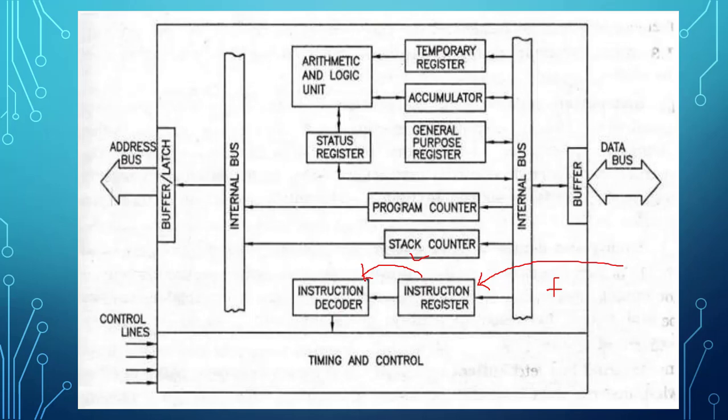This means the instruction decoder has to do the decoding. It means we need to interpret exactly what the instruction is, or what needs to be executed. The decoder does the decoding, and once the decoding process is finished, it will start the timing and control.